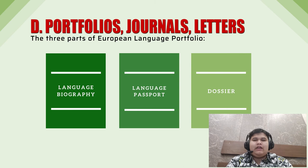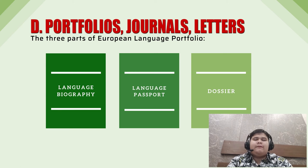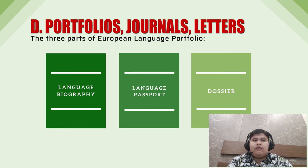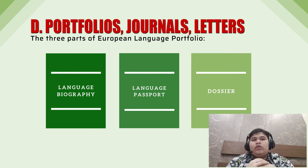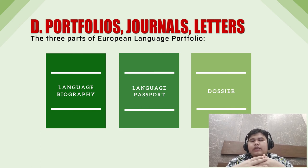Hi everyone, my name is Muhammad Fikri Yazid, my student number is 2019-081-0262. At this time I would like to explain about portfolios, journals, and letters. Many educational institutions and teachers get students to keep portfolios of examples of their work written over a period of time. This can be used for assessment, and also as a way of encouraging students to take pride in their work.